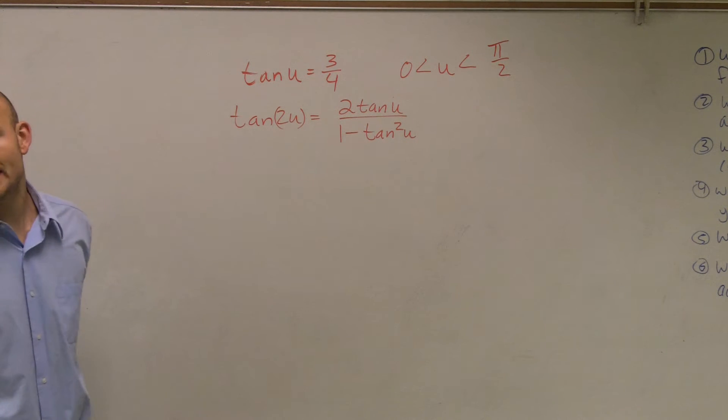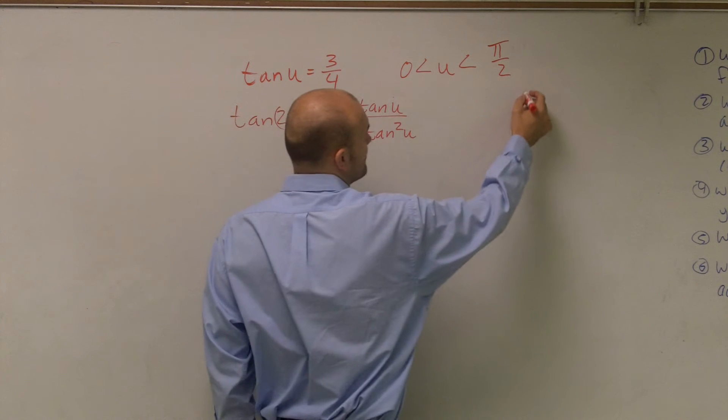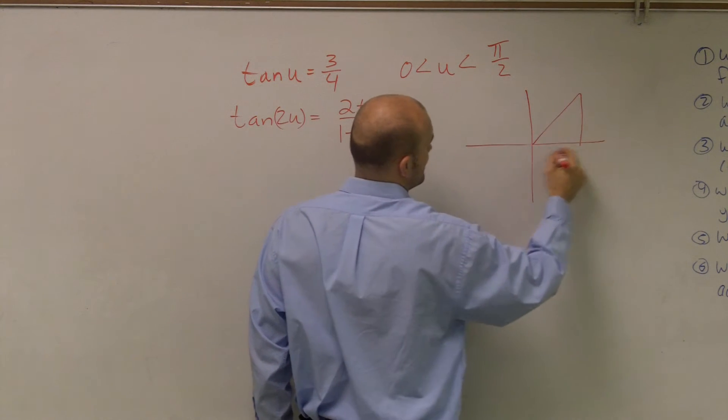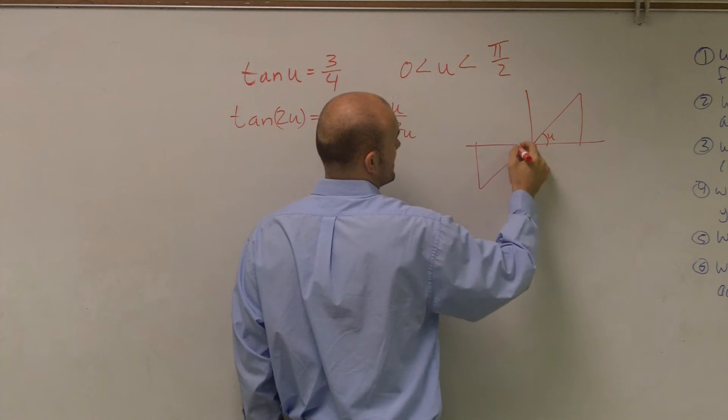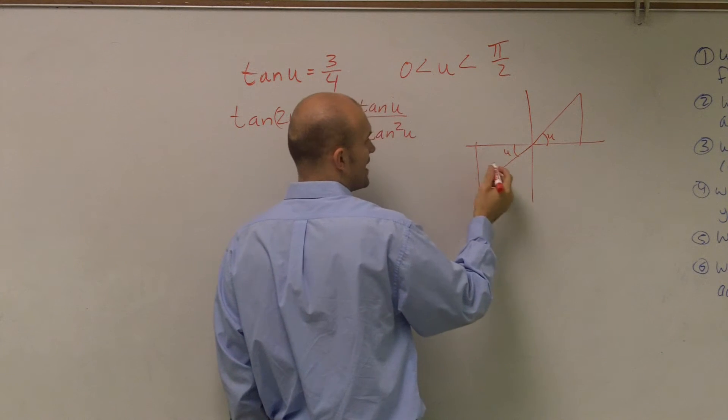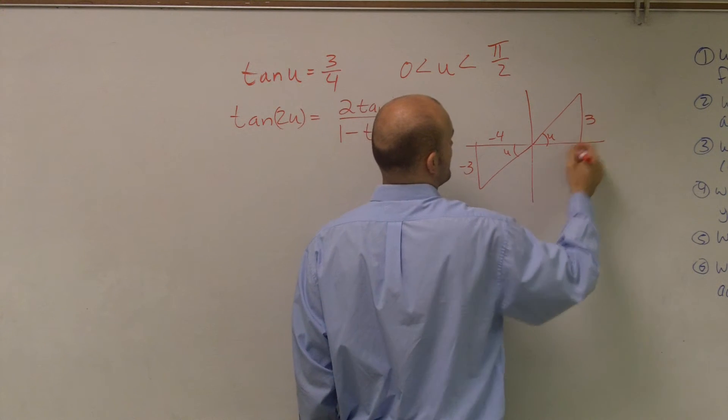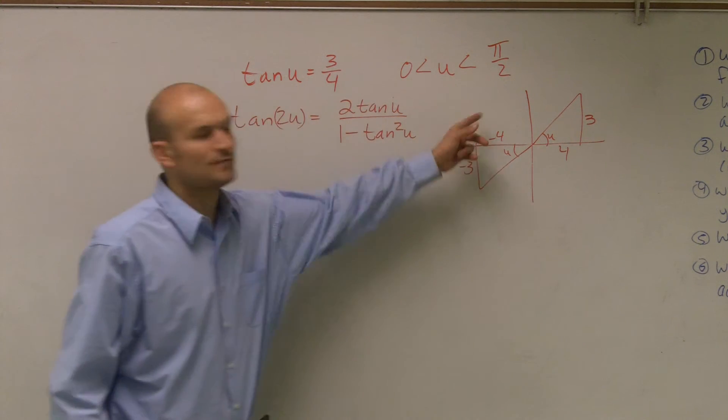And luckily, they give us constraints because 3 fourths, I can actually write that as two separate triangles. That could be this triangle or you could be right there because I could have a negative 3 over a negative 4 or I could have a 3 over 4.